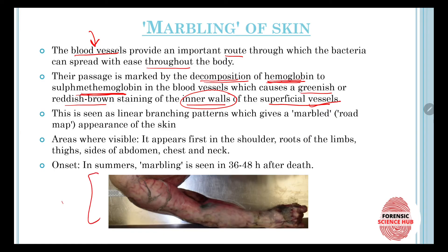As you can see in this picture, this change is seen as linear branching patterns which give a marbled appearance to the skin. These blood vessels look like branches of a tree, giving a road-map kind of appearance on the skin.